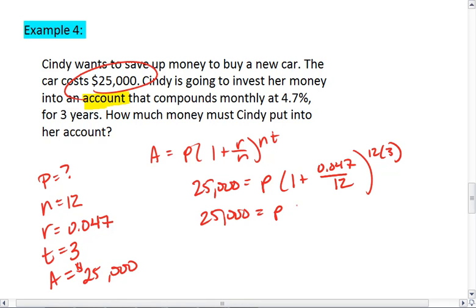We get $25,000 equals P times 0.047 divided by 12 is 0.0039. We want to add 1 to that value. We get 1.0039 to the 36.